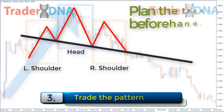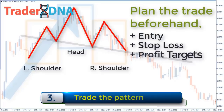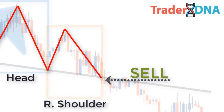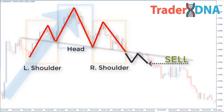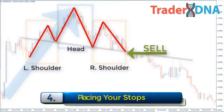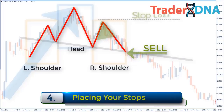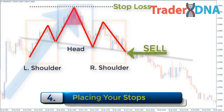Step three: trade the pattern. The trade can be initiated when the pattern completes. Plan the trade beforehand, writing down the entry, stops, and profit targets, as well as noting any variables that will change them. In the head and shoulders pattern we wait for price action to move lower than the neckline after the peak of the right shoulder. For the inverse head and shoulders we wait for price movement above the neckline after the right shoulder forms. Another entry method involves waiting for a pullback to the neckline after a breakout has already occurred — this is more conservative but the move may be missed if price keeps moving in the breakout direction.